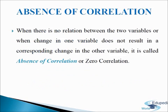Next, we come to absence of correlation. When there is no relation between the two variables, or when a change in one variable does not result in a corresponding change in the other variable, it is called absence of correlation or zero correlation. The coefficient of correlation in this case is zero. When data are plotted on a graph paper, there is no particular trend followed, which means the two variables are uncorrelated.